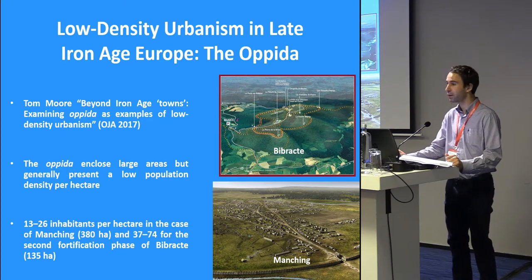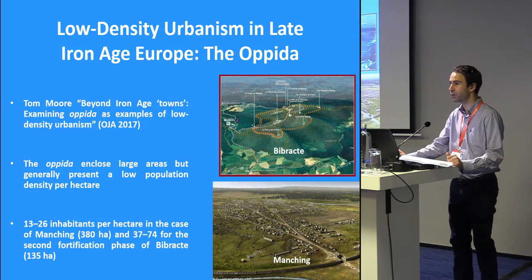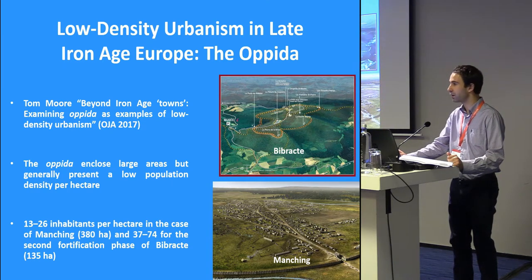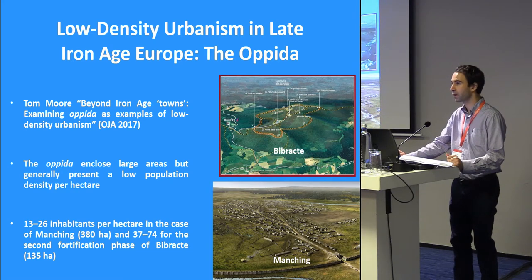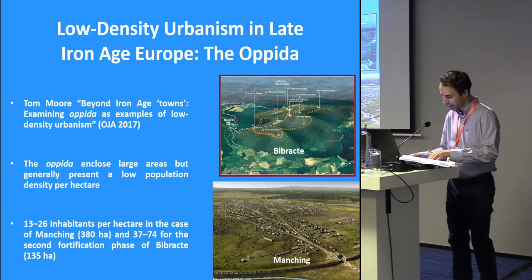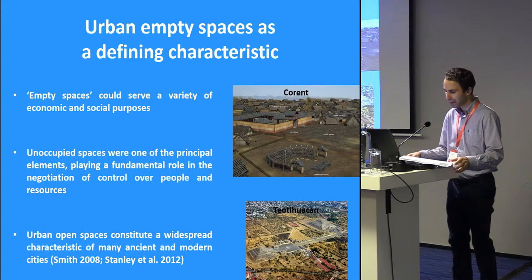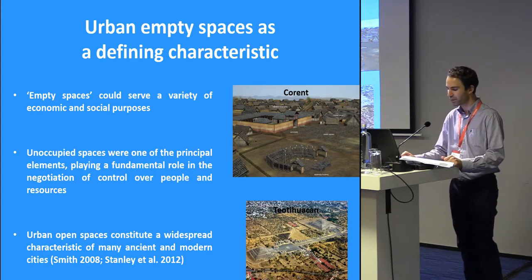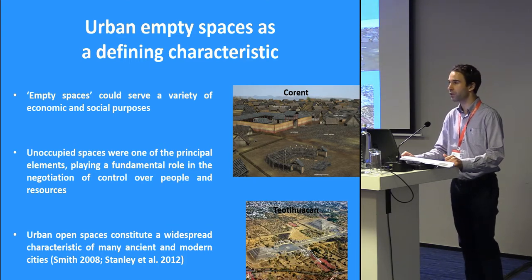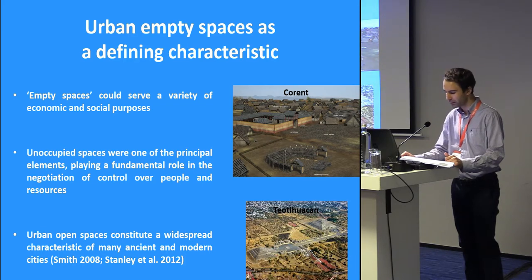I would like to highlight here that the Opida enclose large areas, but generally present a low population density per hectare. The figures of 5,000 to 10,000 inhabitants proposed for Manching and Bibracte would result in a population density of 13 to 26 inhabitants per hectare in the case of Manching, and 37 to 74 for the second fortification phase of Bibracte. This means that even these and other Opida such as Tittelberg, that present a significant internal occupation, also include large free areas inside the fortified space. The layout of the walls was often determined by the local topography, but in addition, the empty spaces could serve a variety of economic and social purposes, from areas for agriculture and cattle breeding, to places for assembly and refuge of the rural population in case of danger. The recurring existence of large open areas within the Opida suggests that these unoccupied spaces were in fact one of the principal elements, playing a fundamental role in the negotiation of control over people and resources.